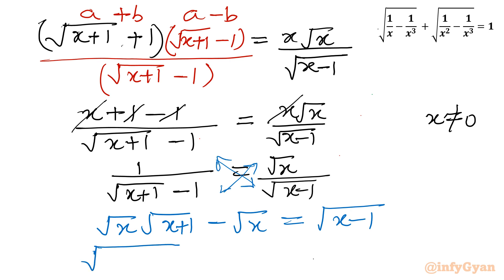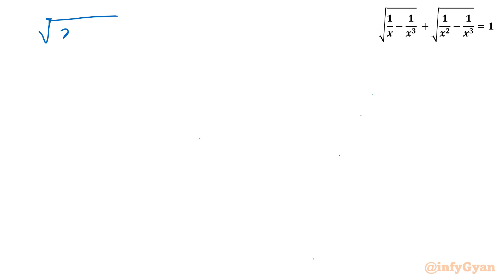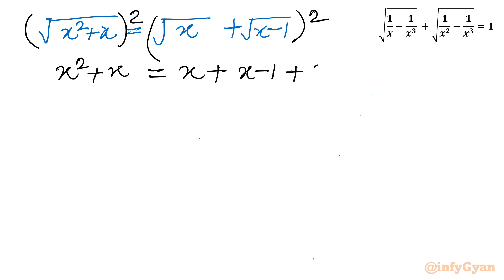Now I will take the square root of x term to the right hand side. So it becomes: square root of (x² + x) equals square root of x plus square root of (x − 1). Now consider squaring both sides. The left side becomes x² + x, and the right side expands as x plus (x − 1) plus 2 times square root of x(x − 1).